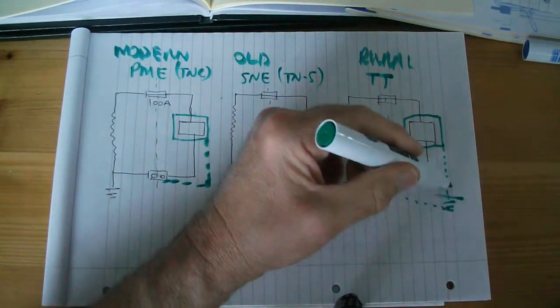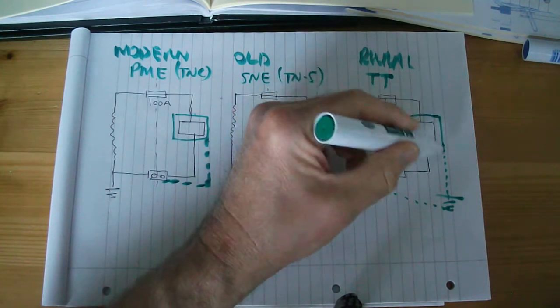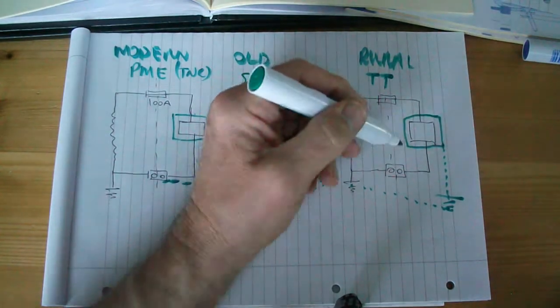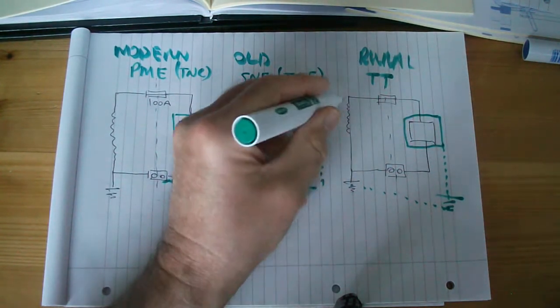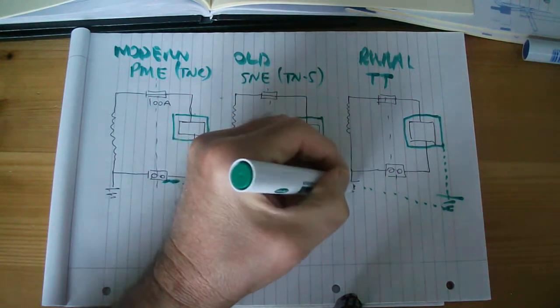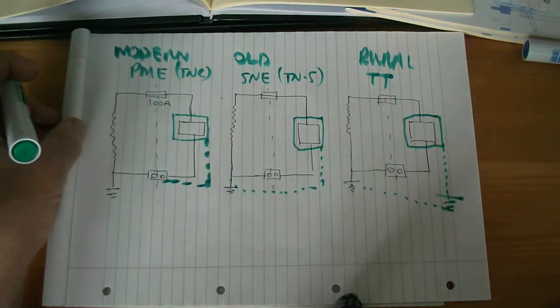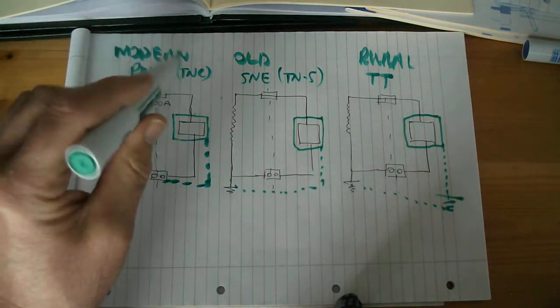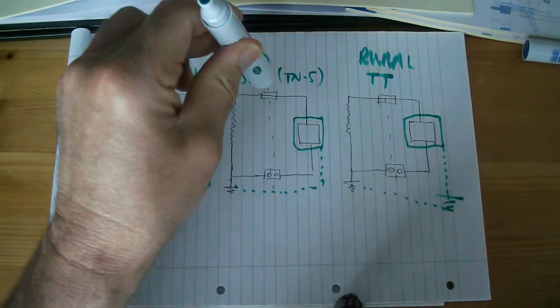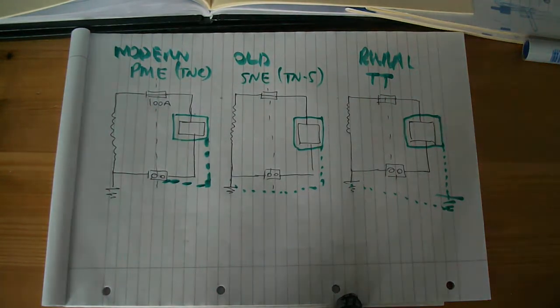And this electrode would normally be stuck in the ground in the premises, near the distribution board at the house. And this electrode, if this was an overhead transformer, then this electrode would be at the bottom of the pole. Okay. So you might get questions like that cropping up in multiple choice, asking you what PME is or SNE. Okie dokie. We'll load that one up.